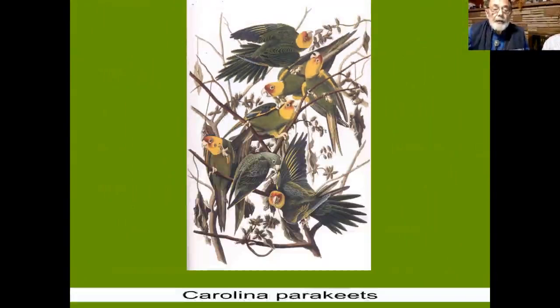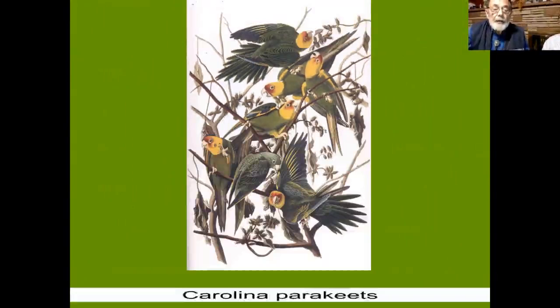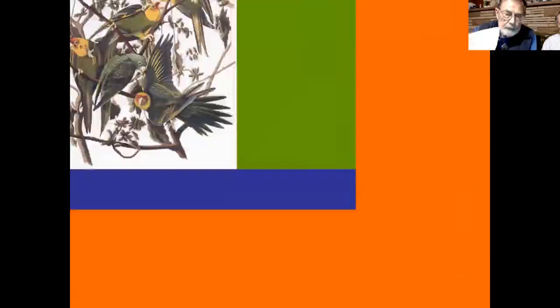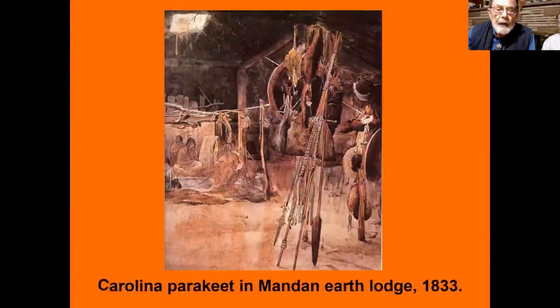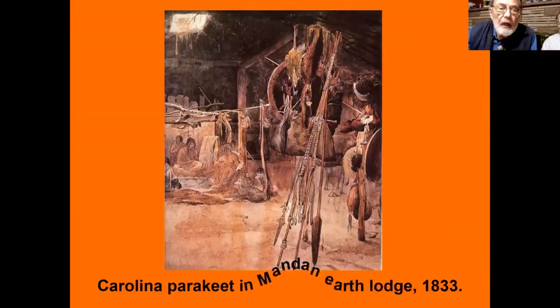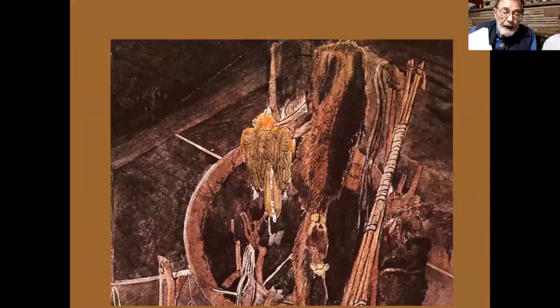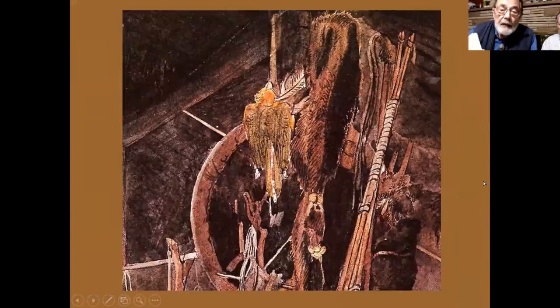The Carolina parakeet is a very colorful bird now extirpated from North America. Its distributional history has been expanded through interdisciplinary efforts. Paul Wilhelm, Duke of Wurtemberg, visiting Missouri in 1822, mentioned seeing them in great flocks and noted that Missouri natives killed them and used them for fish bait. Carl Bodmer, a talented Swiss artist, painted a Carolina parakeet in a Mandan earth lodge in 1833. The color and shape of the beak confirms it was indeed a Carolina parakeet — quite far north of its known range.